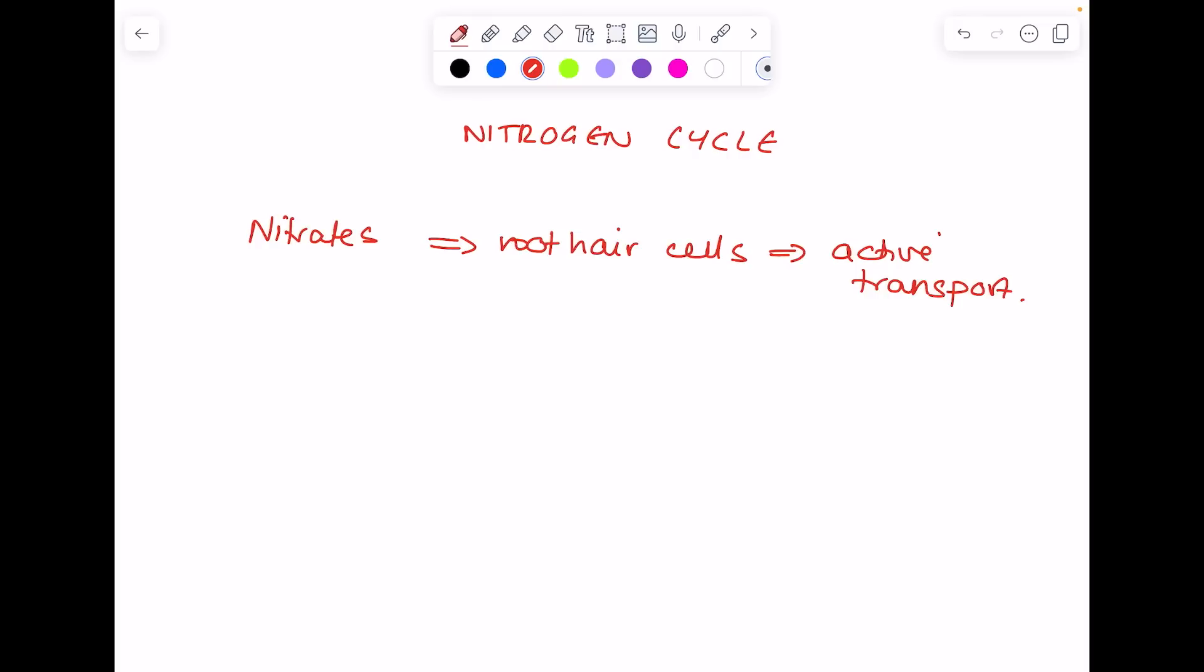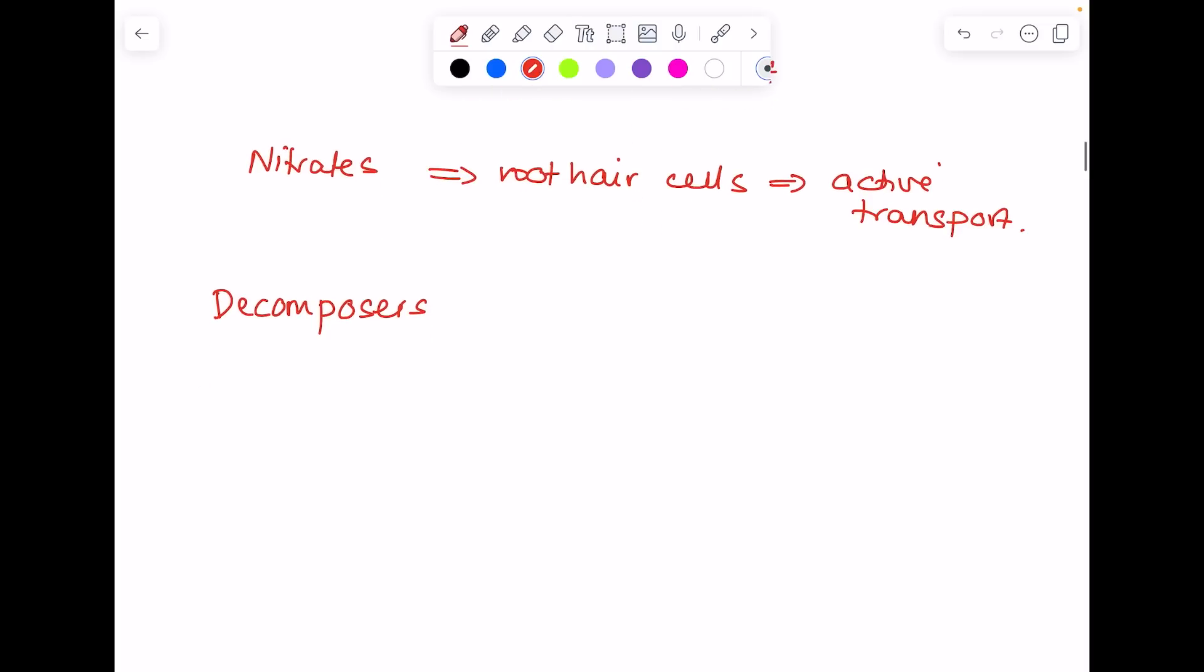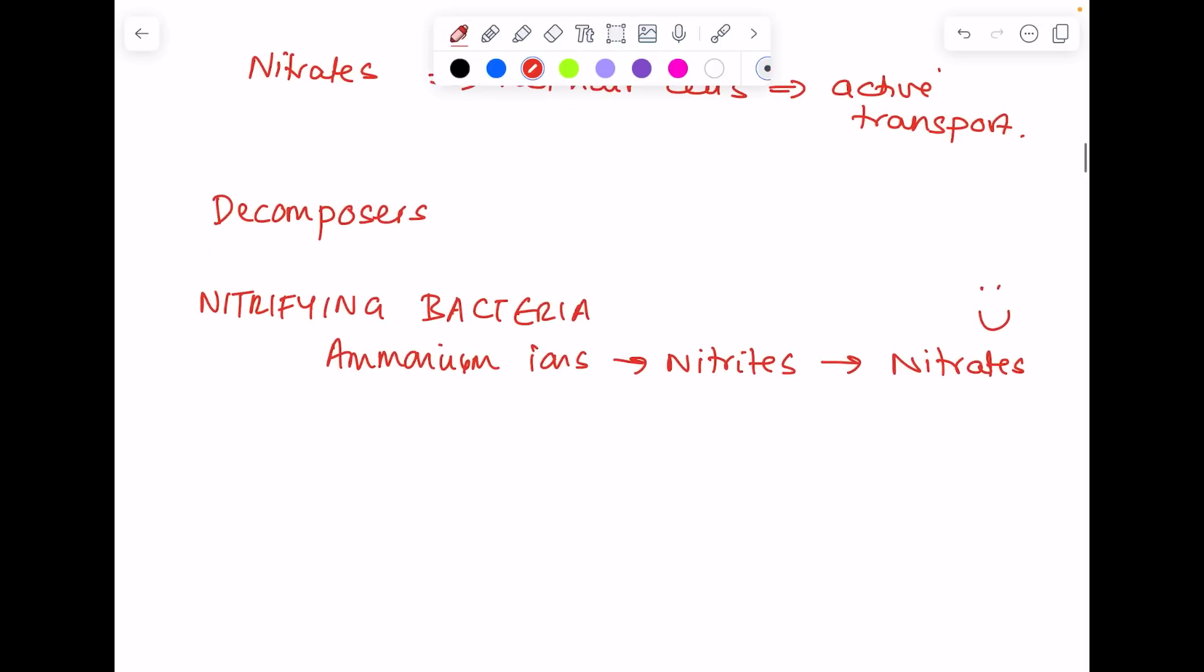Plants and animals die and are decayed by decomposers. Then you have nitrification, which is carried out by nitrifying bacteria. You must learn exactly what these do. They convert ammonium ions into nitrites, and then lastly nitrates, which is a good thing because plants want nitrates to make proteins.